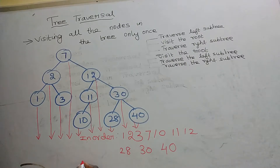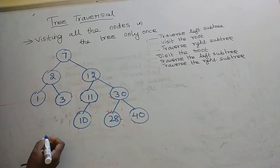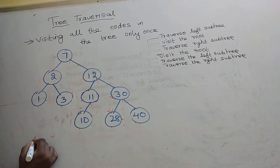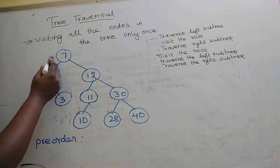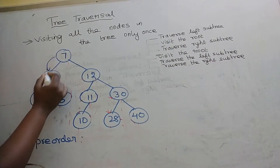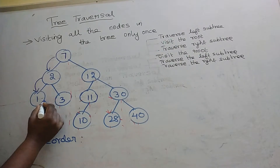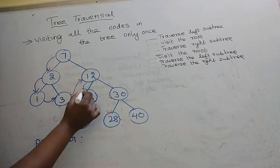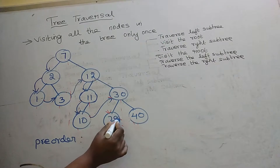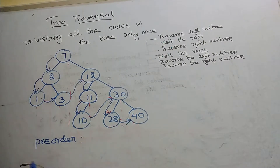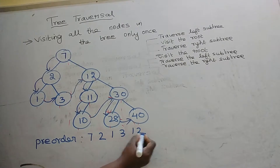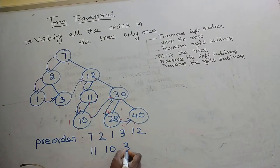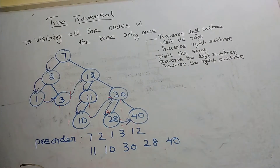The next one is preorder traversal. Now we are going to find out the preorder traversal of this tree. For preorder traversal, first we print 7, then 2, then 1, then 3, then 12, then 11, then 10, then 30, then 28, then 40. So the preorder traversal is: 7, 2, 1, 3, 12, 11, 10, 30, 28, 40.